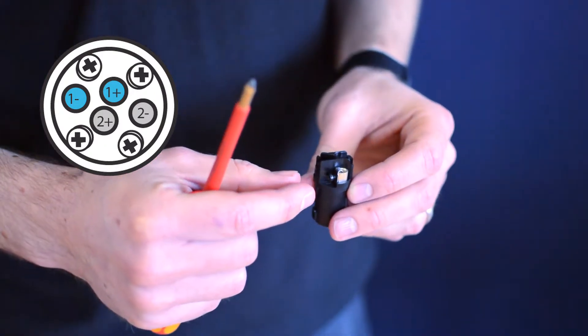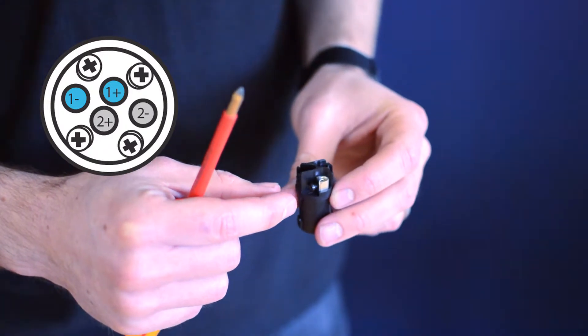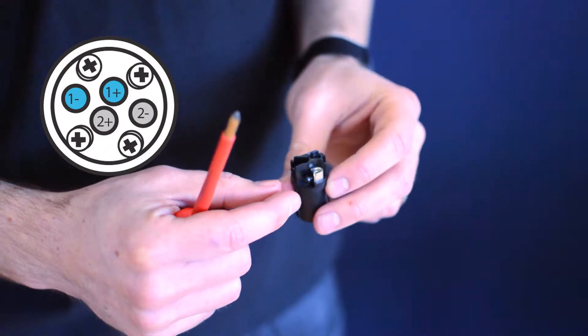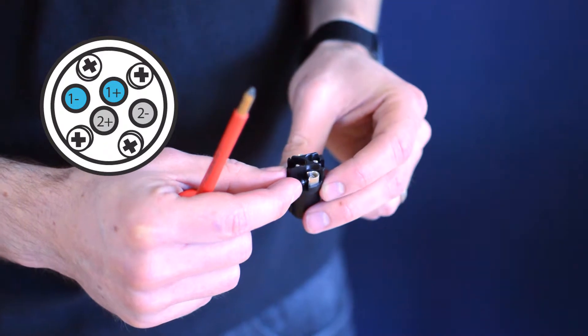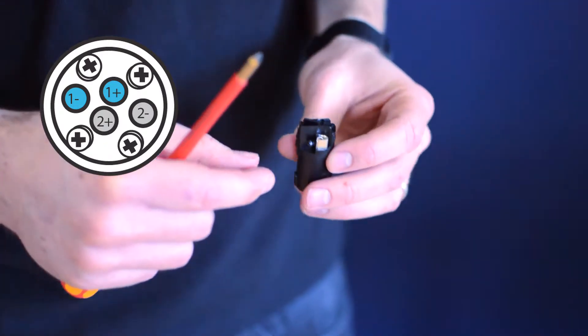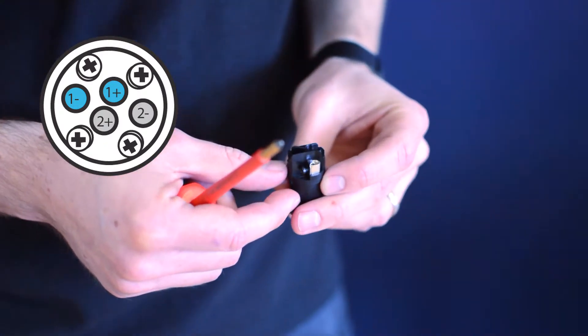What you'll find is that the positive and negative pairs, the screws point in the same direction. So you can see here these are plus and minus one, these are plus and minus two. It's quite easy to see which ones you need.